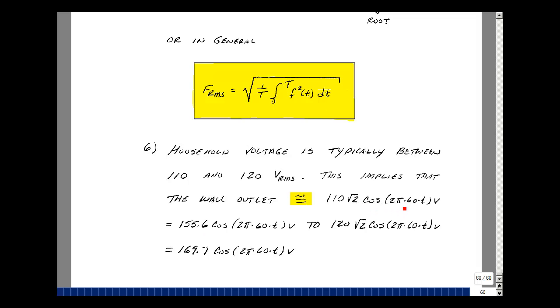If you had 120 volt RMS value at your wall outlet, the peak value would be the square root of 2 times that, or 169.7. These are some of the properties of root mean square.